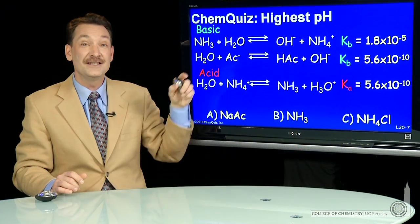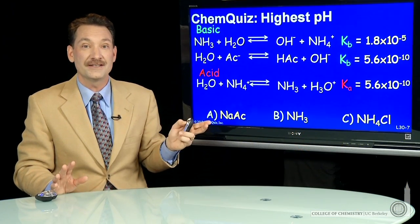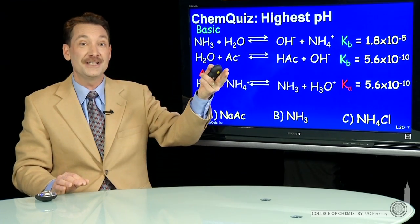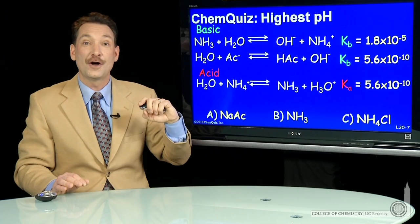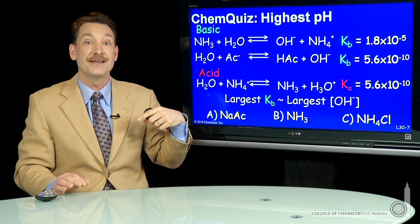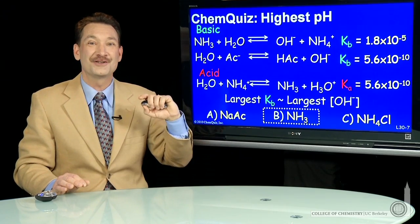And we have to go between these two, which are both bases. And of these two, NH3 is the stronger base. So the highest pH, the highest OH- concentration, comes from the strongest base. And in this case, that is NH3.